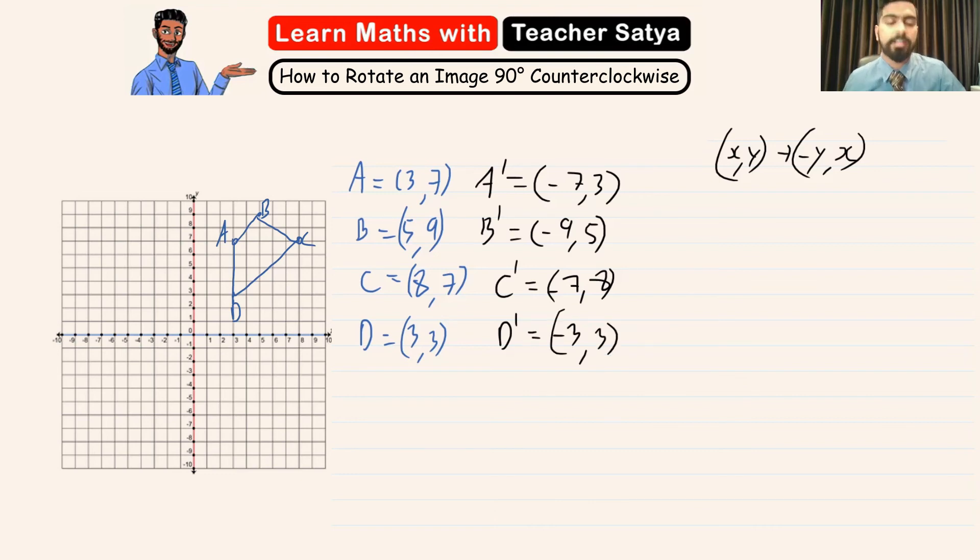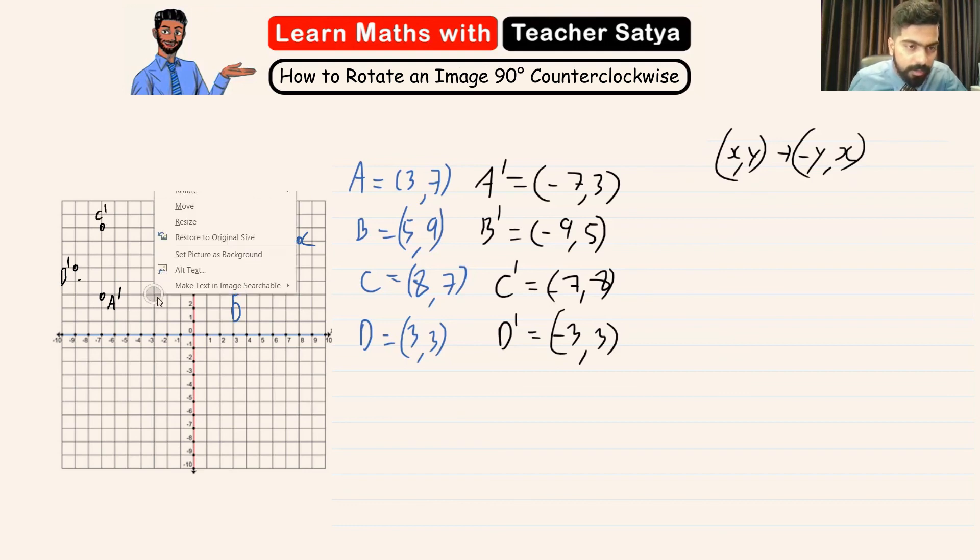Now let us take this new point and plot it on the graph. So our A prime is negative 7 and 3 which is right here. Negative 9 and 5 will be our B prime. Negative 7 and 8 will be our C prime. And negative 3 and 3 will be our D prime. And if we join the dots the image will look something like this.